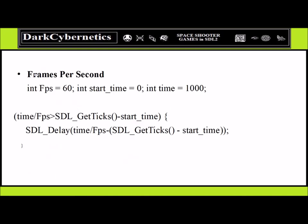Regulating frames per second is another implementation detail. We can say the frame rate is 60, our start time is zero, and our time is 1000 milliseconds. We can divide and subtract the time using SDL_Delay, and we will put this inside our game loop.